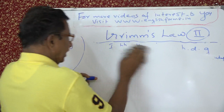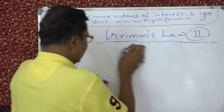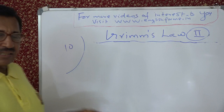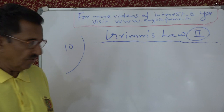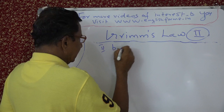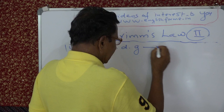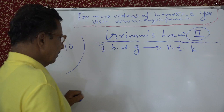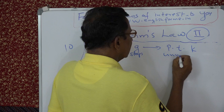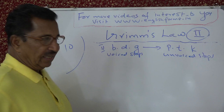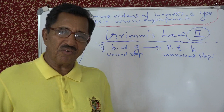Now we pass on to the next three correspondences. The second rule is: Bh, Dh, Gh of Indo-European — these are voiced stops — became in Germanic Ph, Th, Kh. That is, voiced stops became voiceless stops. You can say voiceless or unvoiced, depending on your style.